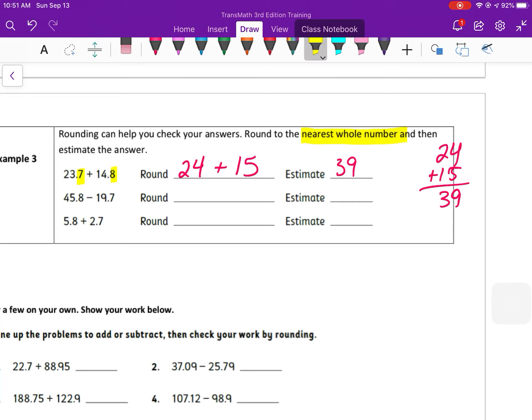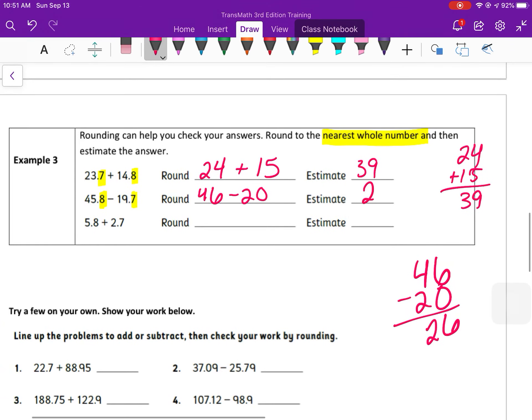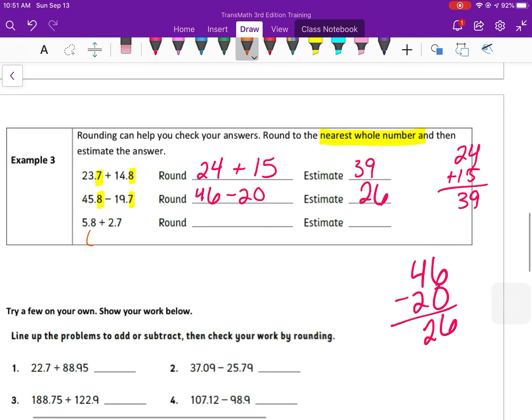Rounding with subtraction. So 45.8 is going to round up to 46. 19.7 is going to round to 20. And 46 minus 20, if I subtract 6 minus 0 and 4 minus 2 is going to be 26. My estimate for that answer would be 26, which is an approximation, like a close guess to that answer. 5.8 rounds up to 6, plus 2.7 rounds up to 3. So my answer there would be close to 9. So if I took 5.8 plus 2.7, I should get an answer that's really close to 9. So 8 plus 7 is 15. Carry the 1. 5, 6, 7, 8.5. So you can see the actual answer, 8.5 is close to my estimate of 9.